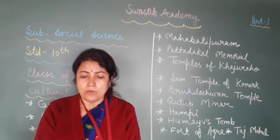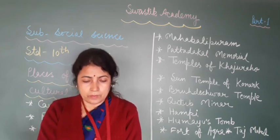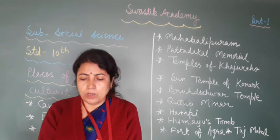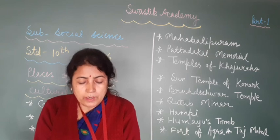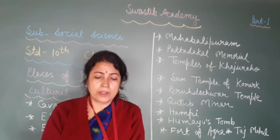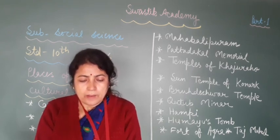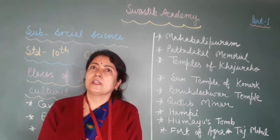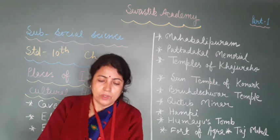The Agra Fort is 70 feet tall. Jahangir Palace was built by Akbar inside the fort. The architecture style of Bengal and Gujarat can be seen clearly in Jahangir Palace. Shahjahan spent the last days of his life in the Agra Fort. The Taj Mahal is a world-famous monument on the banks of river Yamuna.